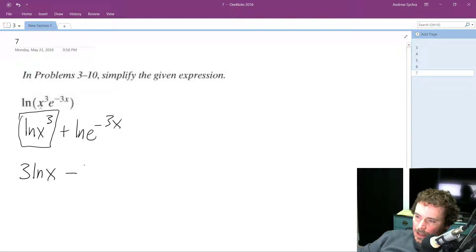But here what I can do is I can pull the three out. Actually I'm going to have to pull the three out. Natural log of e cancels out so we just get our base case of minus three x.